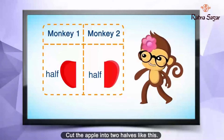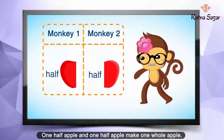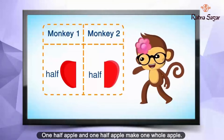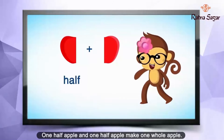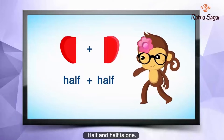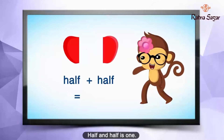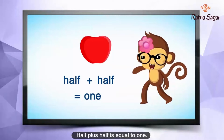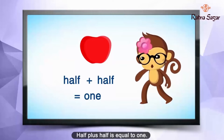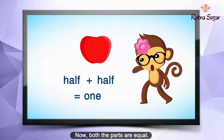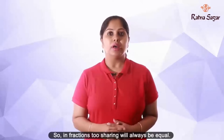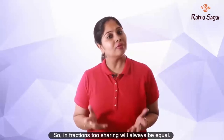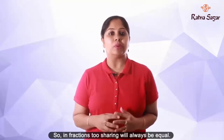Cut the apple into two halves like this. One half apple and one half apple make one whole apple. Half and half is one — half plus half is equal to one. Now both the parts are equal. So in fractions, sharing will always be equal.